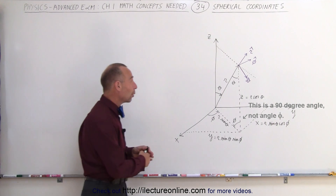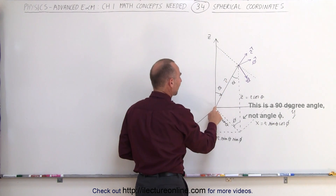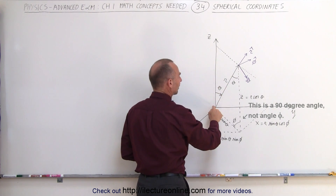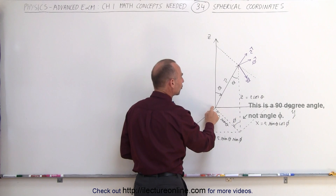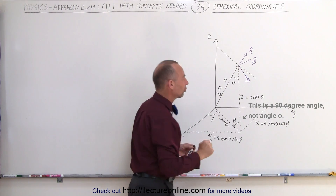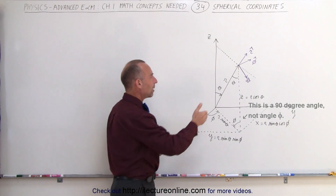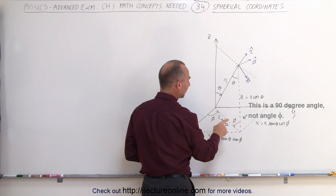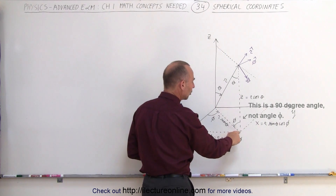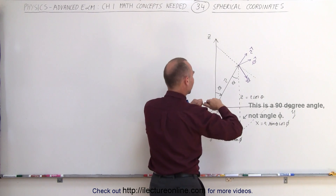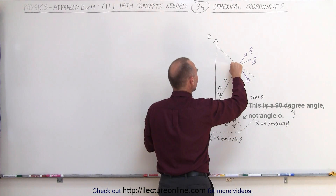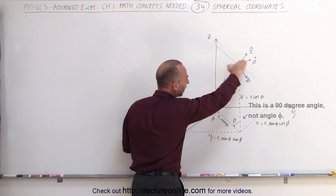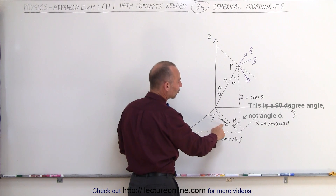Let's take an arbitrary point in space. We have a vector pointing from the origin to that particular point, and that vector is the R vector — the position vector from the origin indicating where the point is located. When we drop down a line vertically from the point straight down to the xy plane, the distance from the z-axis to that point, parallel to the xy plane, is R sine theta.